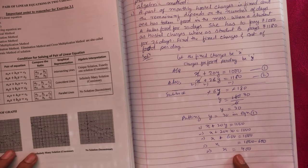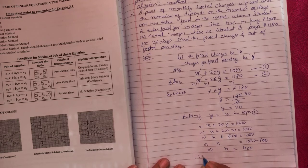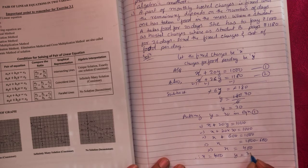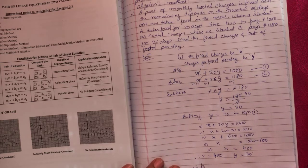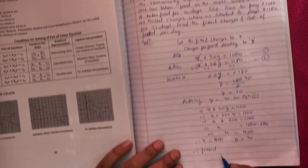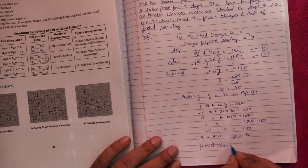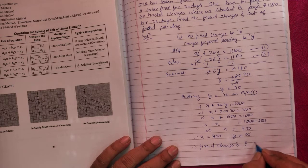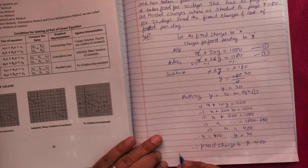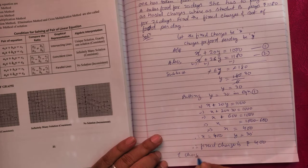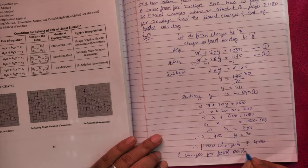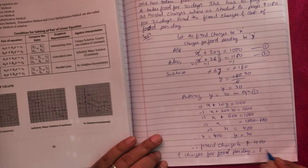Now your fixed charge you got is x equals 400 and y equals 30 rupees. So you can say, therefore, fixed charge is rupees 400 and charges for food per day is rupees 30.